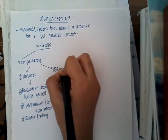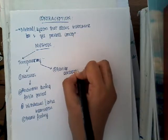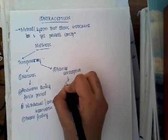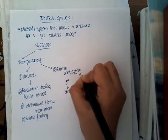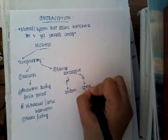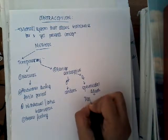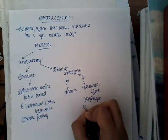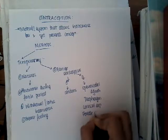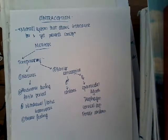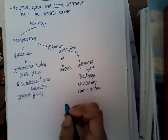The second type is barrier contraception. In males, condoms can be used. In females, spermicidal agents, diaphragm, cervical cap, or female condom can be used. These are the different methods available for barrier contraception.